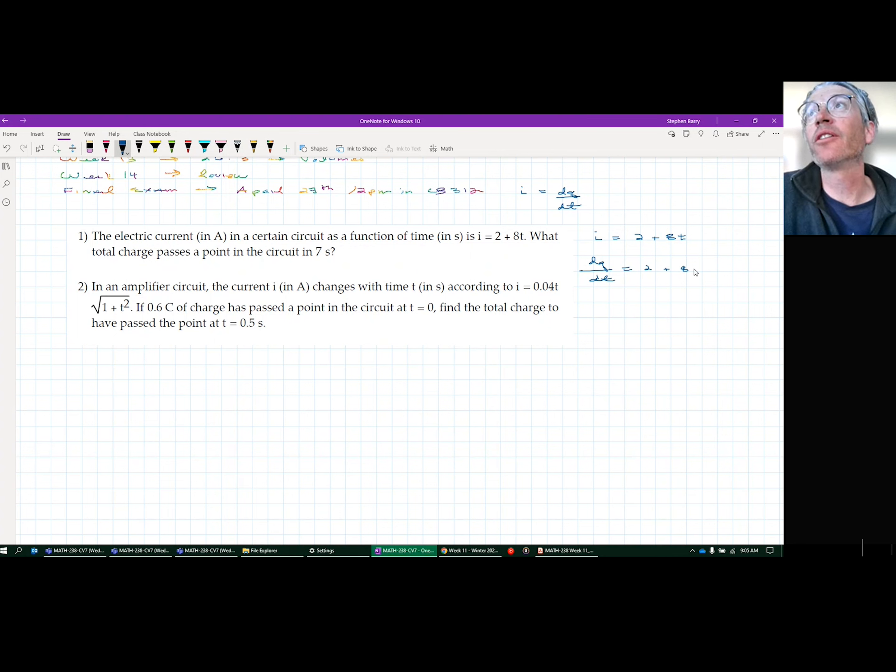That's the hard part because then you can say, well, therefore DQ is I times DT. And then you can take the integral of both sides.